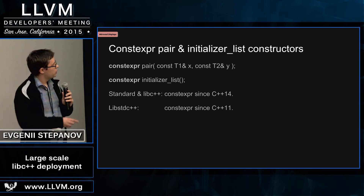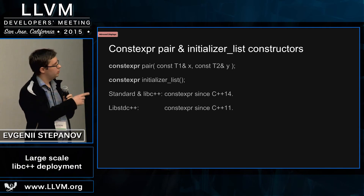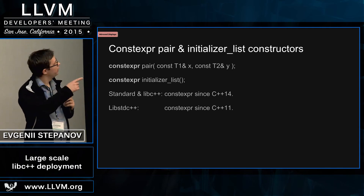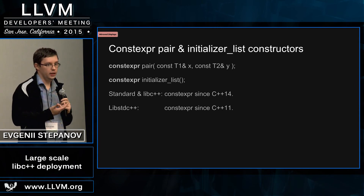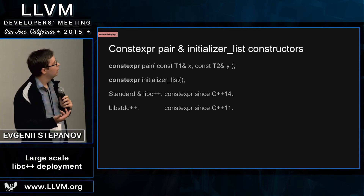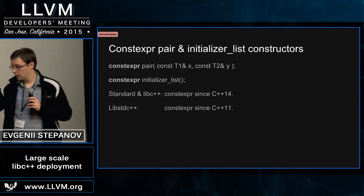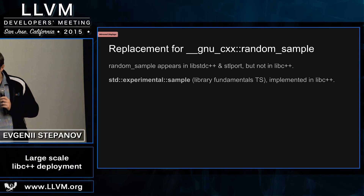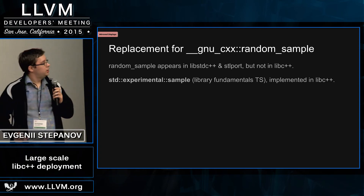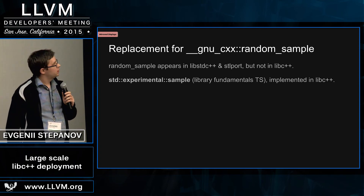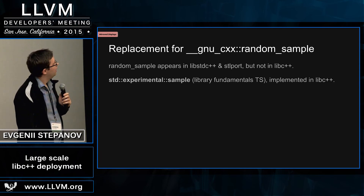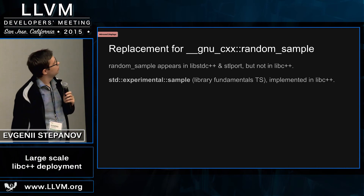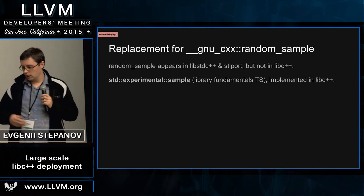This is another violation of the standard on the side of libc++: pair and initializer_list have constexpr constructors in C++11 there, but by the standard they are only present in C++14. Also, since recently, libc++ has a replacement for the non-standard random_sample function. This is a complete replacement, so no problem there.